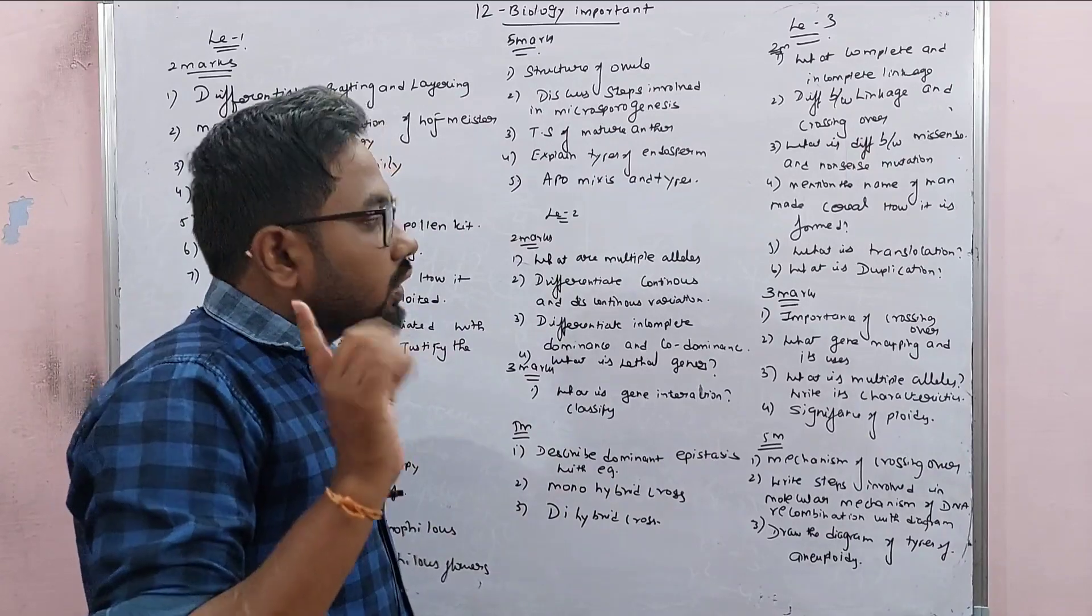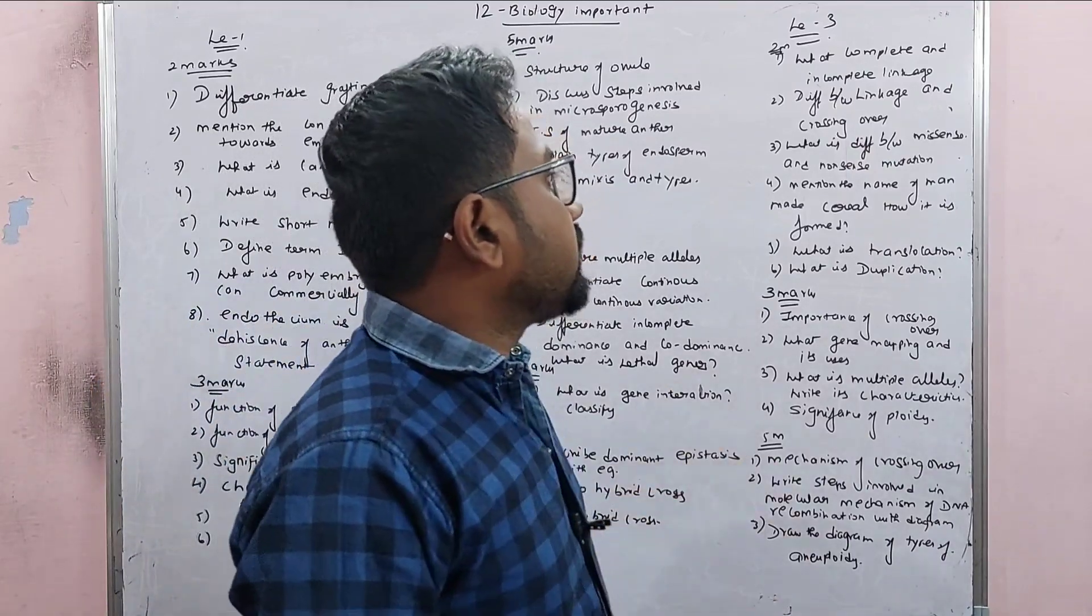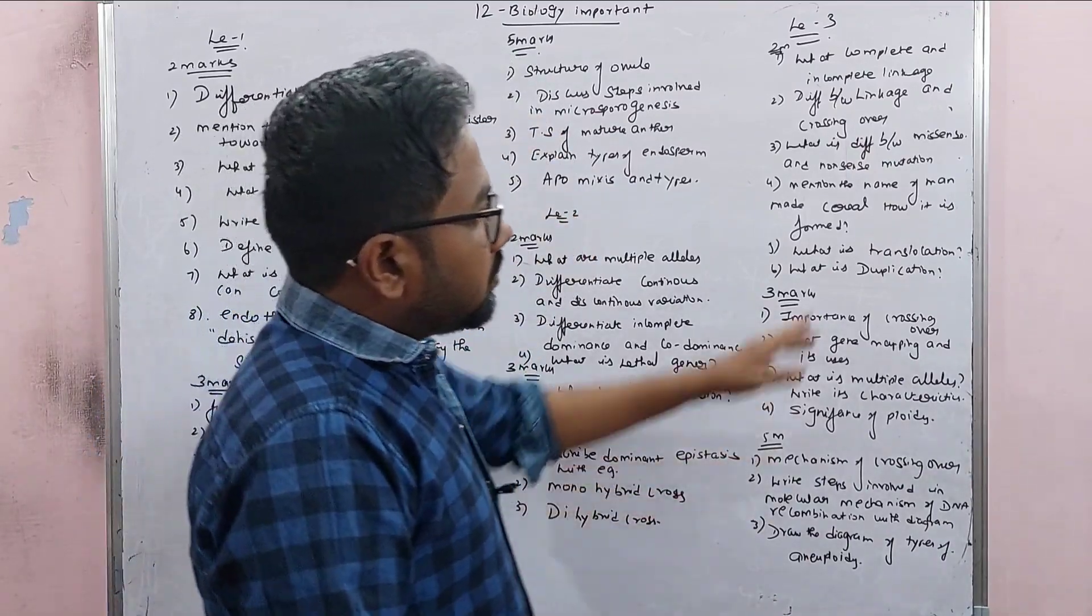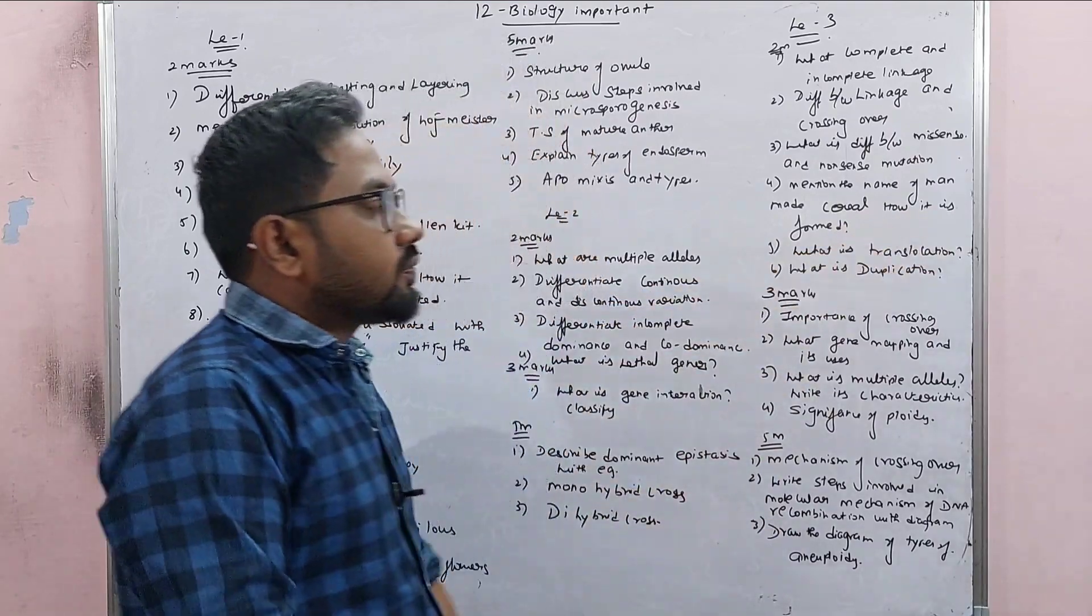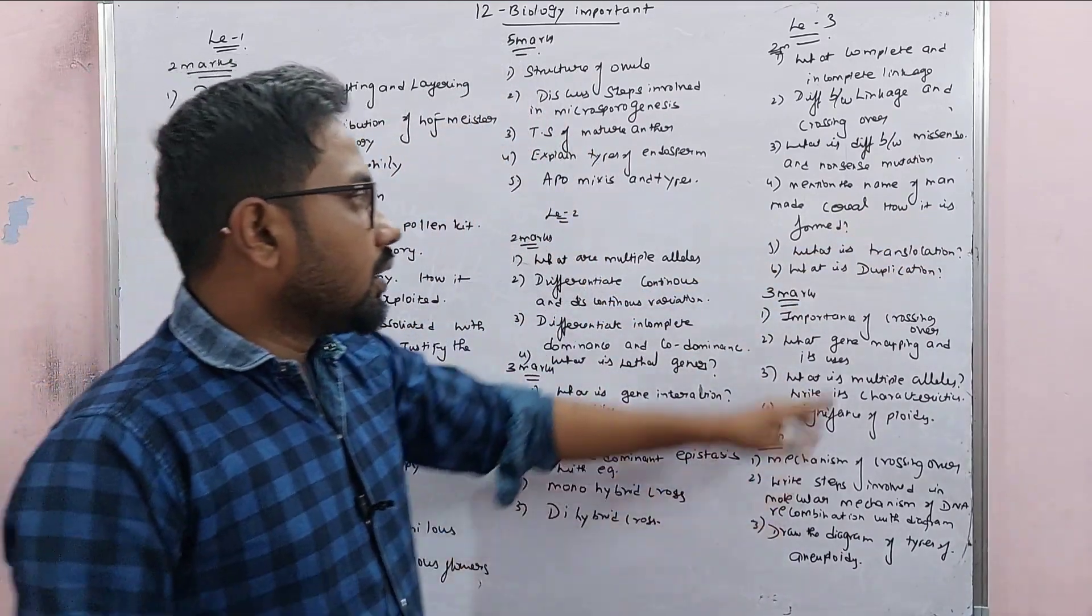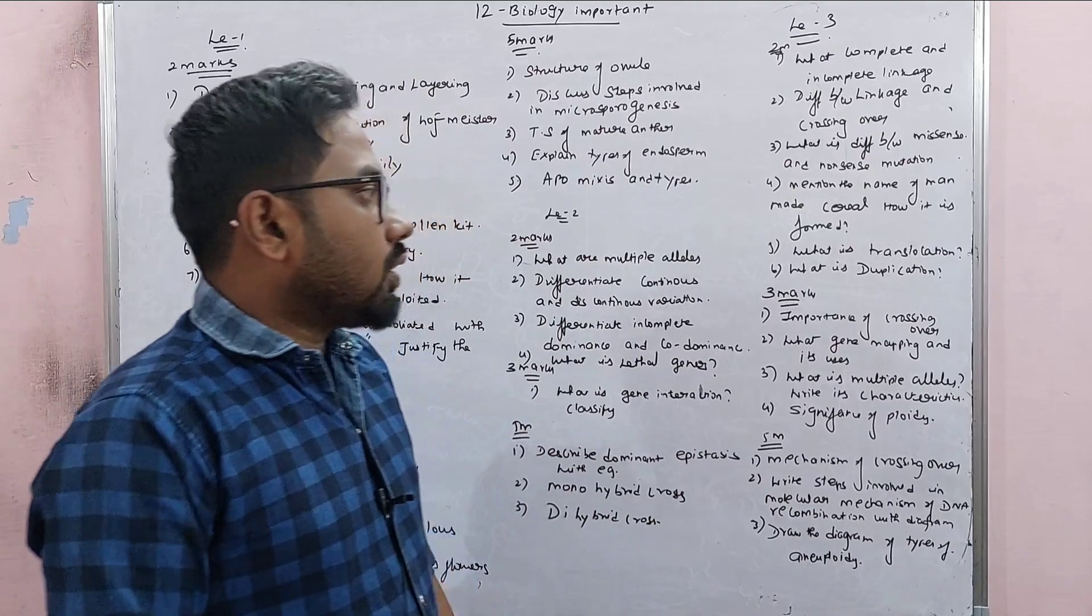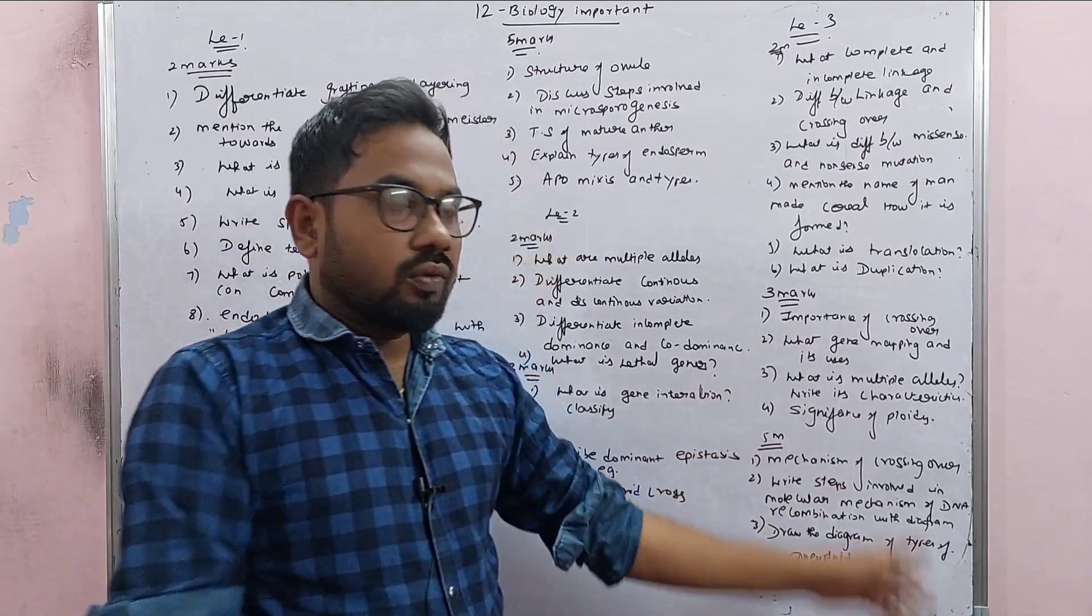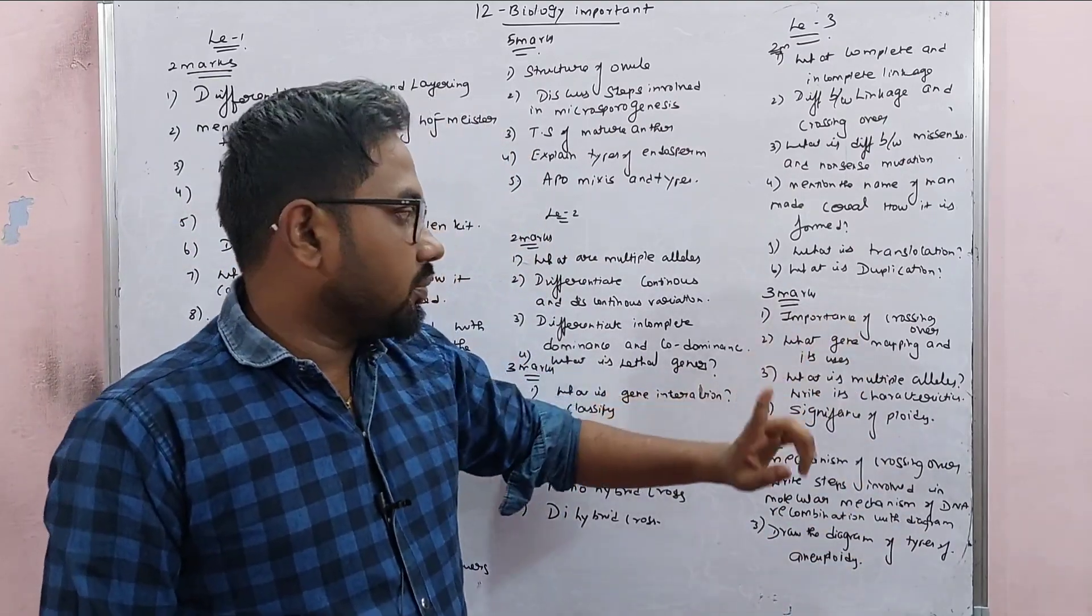First method: What is crossing over? What is difference between mis-sense and non-sense mutation? Mention the name of man-made cereal. What is translocation? What is duplication? Importance of crossing over, very very important 3 mark.